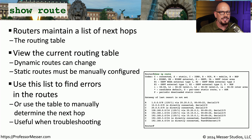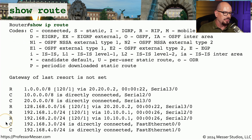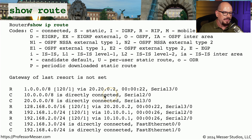You can then use that process on every router throughout the path to track traffic from one end of the network to the other. Here's an example of the show route command from a Cisco router. At the top is a list of all of the abbreviations used in the routing table itself. There are only two used in this particular routing table: the R abbreviation, which correlates to RIP protocol used to build that route, and C, which is a connected route, meaning that network is directly connected to an interface of this router. You can then step through each one of these routes to see which might apply to the traffic you're looking at.